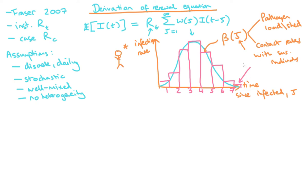Unlike in compartmental models, we're not explicitly accounting for susceptible individuals as a compartment. However, beta plays the role of tracking how the number of susceptible individuals may change over the course of an epidemic. If individuals can recover and remain immune, then over time beta should decrease because there are fewer susceptible individuals available.